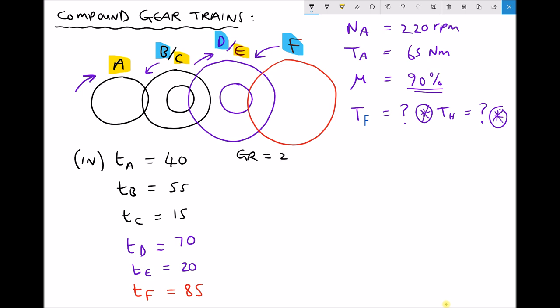So we calculated our gear ratio and we found it to be 27.3 for the compound gearbox. Now we can use that gear ratio to calculate the ideal output torque. And by ideal, we mean the output torque if there were no losses. We said that the gear ratio was T out ideal over T in, or T out ideal equals the gear ratio times T in. Our gear ratio is 27.3 and T in is specified in the question as 65, giving us an ideal output torque equal to 1772.6 newton meters.